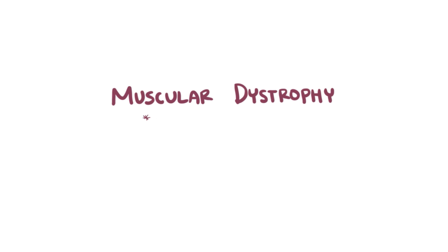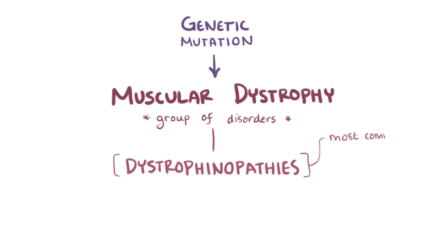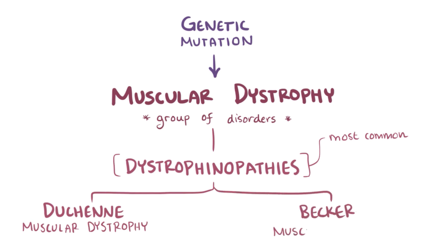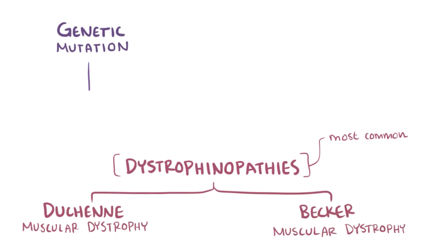Muscular dystrophy is actually a group of disorders, all of which are caused by genetic mutations. Within that group, dystrophinopathies are the most common, which includes Duchenne muscular dystrophy and Becker muscular dystrophy, both of which result from mutations in the dystrophin gene.